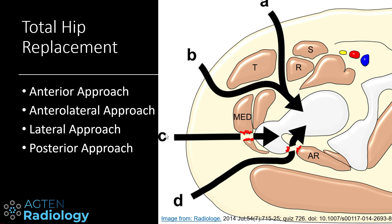Then we have the lateral approach, which is also known as the transgluteal approach. With this approach there has to be some damage to the abductor tendons — mainly the lateral portion of the gluteus medius tendon and also the gluteus minimus tendon. Then we have the posterior approach, and with this approach there has to be some damage to the short external rotator tendons.